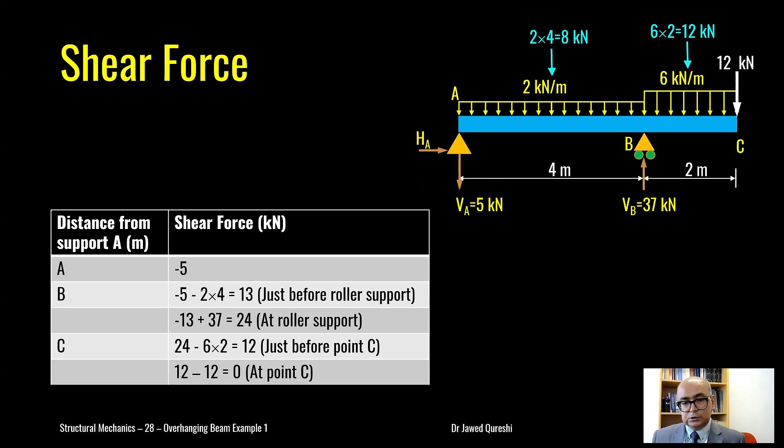So here at point A, when reaction is downwards, downward forces are negative. So that's why you see negative here. Then at point B but just before roller support which is this point. At this point I have minus 5 which is reaction at A and then I will take away 2 times 4 because that is downward one. So minus 5 minus 8 it will give me minus 13. Minus sign is missing over here.